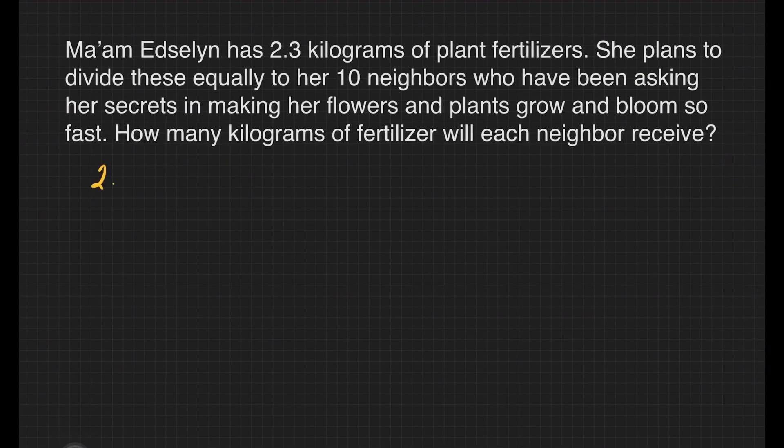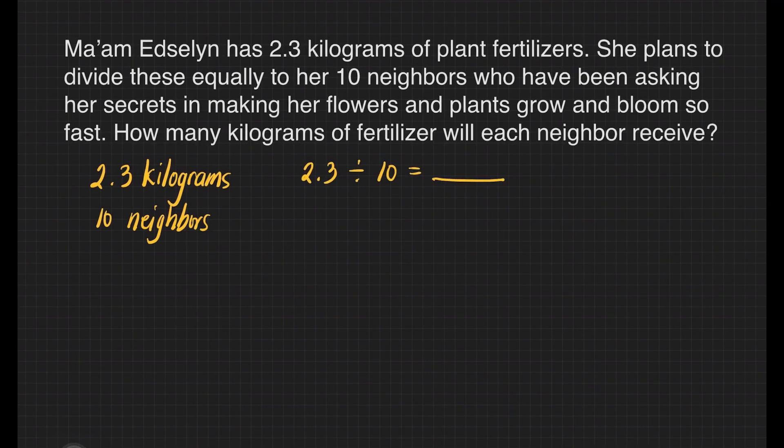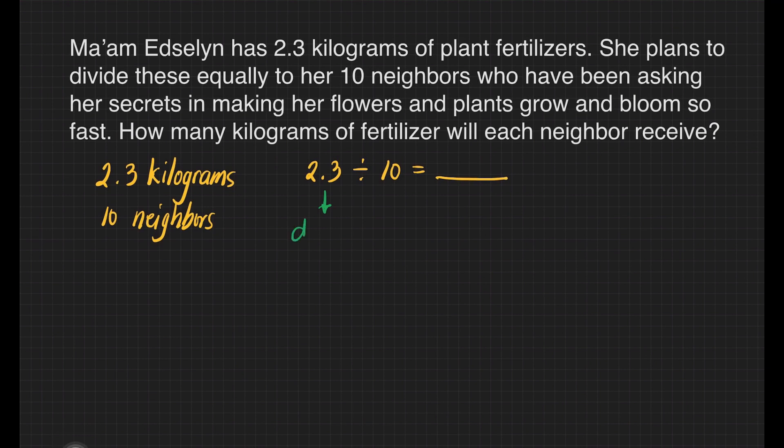Our given: 2.3 kilograms and 10 neighbors. Our division sentence is 2.3 divided by 10 equals blank. 2.3 is our dividend, 10 is our divisor, and the answer is the quotient.